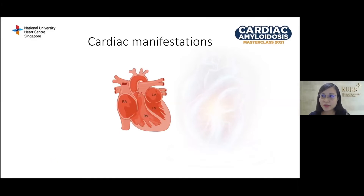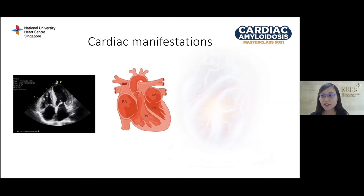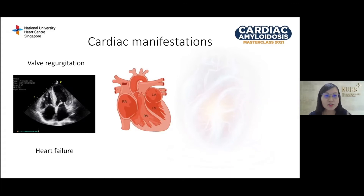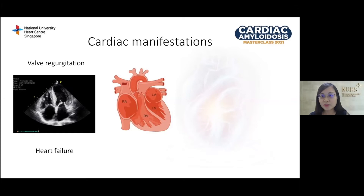In cardiac amyloidosis, deposition of amyloid fibrils distorts the normal cardiac architecture. Deposition in the myocardium leads to thickening of the ventricular wall and septum, causing the left and right heart to be stiff and thick, leading to heart failure symptoms. On echocardiogram, the interventricular septum is very thick and hyperechoic — appearing bright and sparkly. The valves are thickened, often leading to valve regurgitation. The atria are almost always involved; the interatrial septum appears thickened and hyperechoic, leading to poor atrial function and predisposing to atrial fibrillation, which can sometimes occur years before the onset of heart failure.